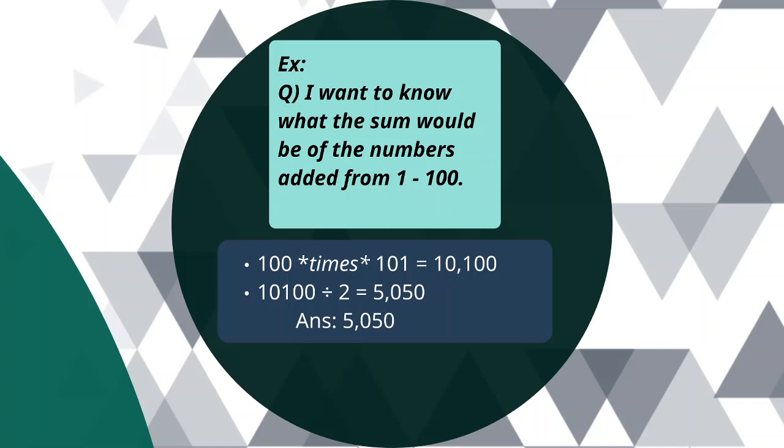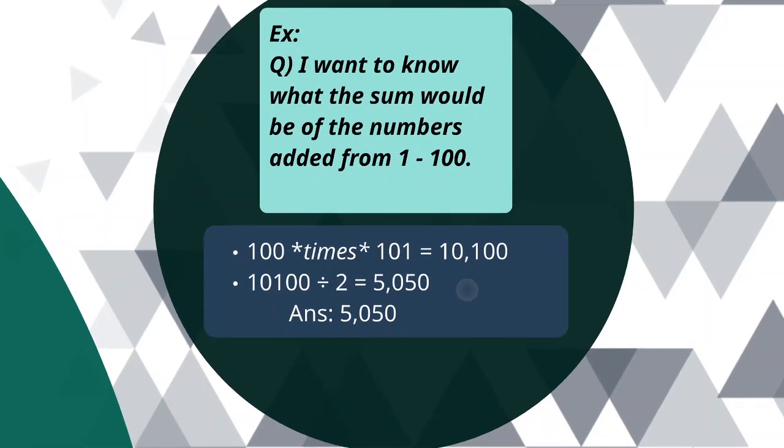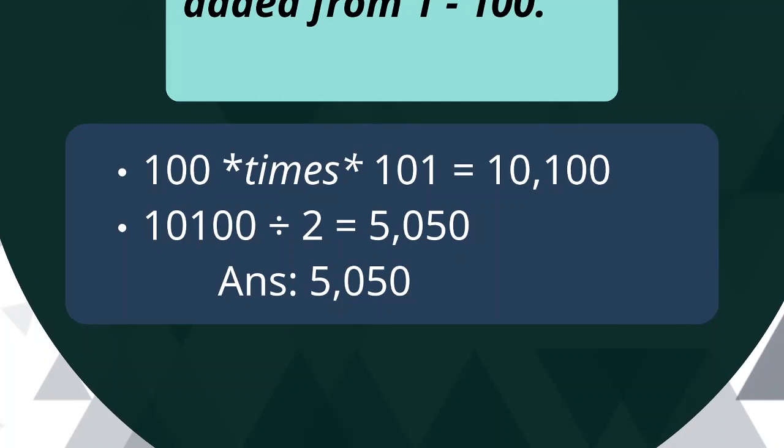First thing we do, multiply the number one more by itself. So 100 times 101 equals 10,100. And then 10,100 divided by 2 as our second step is 5,050. And that's our answer. The same thing Karl had also gotten.